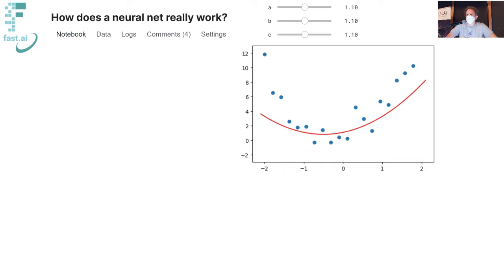A pre-trained model is a bunch of parameters that have already been fit, where some of them you're already pretty confident of what they should be, and some of them we really have no idea at all. Fine-tuning is the process of taking those ones we have no idea about and trying to get them right, and then moving the other ones a little bit.